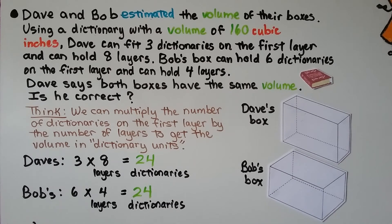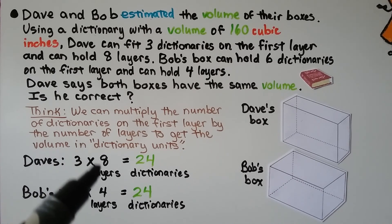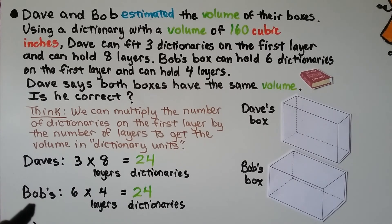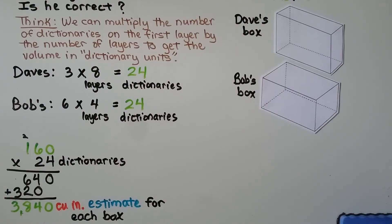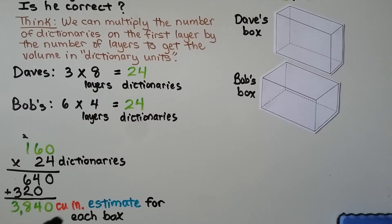We can multiply the number of dictionaries on the first layer by the number of layers. Dave has 3 on the first layer times 8 layers — that's 24 dictionaries. Bob has 6 times 4 — also 24 dictionaries. Dave is correct: both boxes have the same volume. We can estimate: 160 cubic inches times 24 dictionaries equals 3,840 cubic inches.